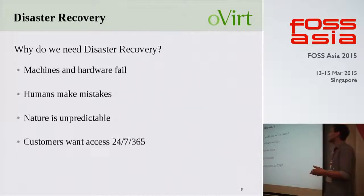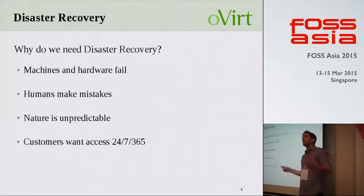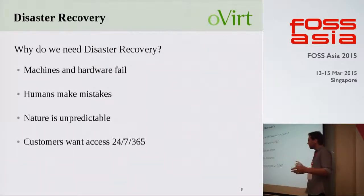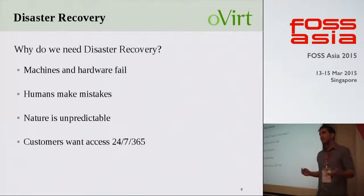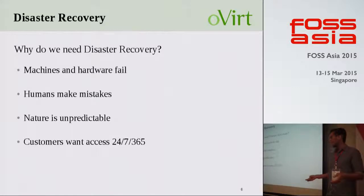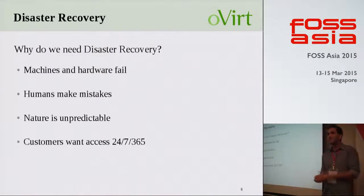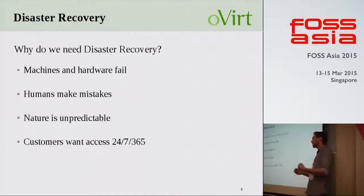There are four general reasons why we need disaster recovery. Machines and hardware might fail, humans make mistakes, and nature is unpredictable. But I want to focus on the customer who expects access 24/7, 365 days a year. Think of connecting to your Gmail server and Gmail tells you: we're sorry, we had a disaster, all your mails got deleted. At the moment that happens, you won't use Gmail anymore. In today's era, this is really crucial — customers expect you to have their data available anytime and anywhere.